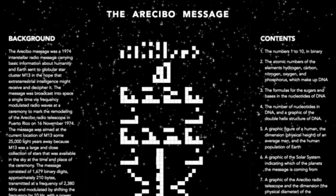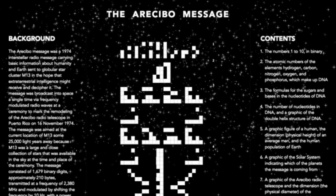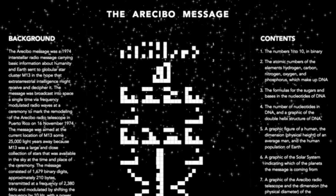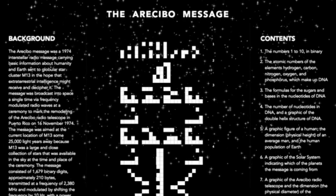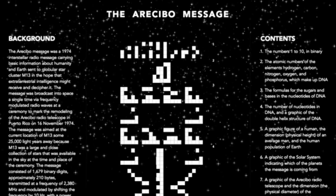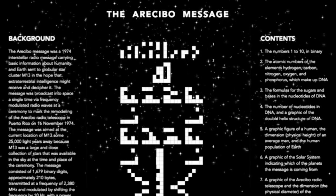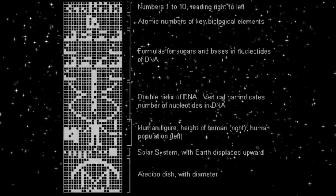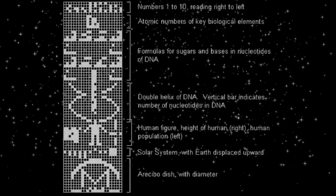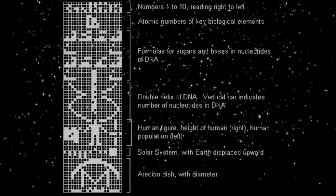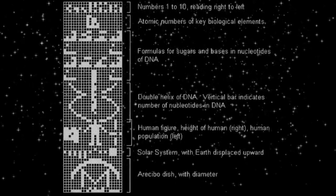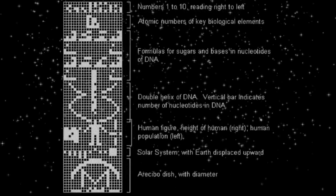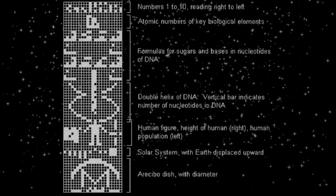From the top down: the numbers 1 to 10, the atomic numbers of the elements hydrogen, carbon, nitrogen, oxygen, and phosphorus which make up deoxyribonucleic acid DNA, the formulas for the sugars and bases in the nucleotides of DNA, the number of nucleotides in DNA, and a graphic of the double helix structure of DNA.